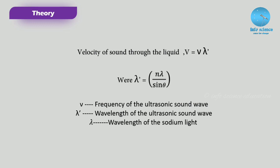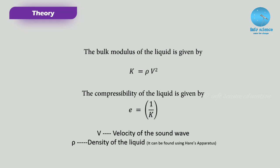Here we are finding the velocity of sound through liquid. The equation is: velocity of sound through the liquid, v = ν × λ', where λ' = nλ / sin θ. Here, ν is the frequency of the ultrasonic sound waves, λ' is the wavelength of the ultrasonic sound wave, n is the order, and λ is the wavelength of the sodium vapor lamp being used.